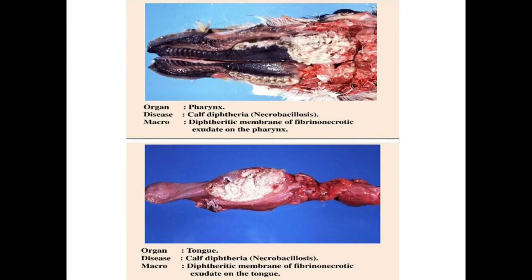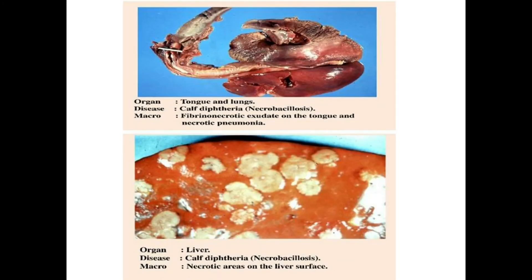In the images, you can see the pharynx in calf diphtheria: a diphtheritic membrane of fibronecrotic exudate on the pharynx is visible in the upper image, while the bottom image shows tongue lesions — a diphtheritic membrane of fibronecrotic exudate on the tongue. Additionally, fibronecrotic exudate on the tongue, necrotic pneumonia of the lung, and necrotic areas on the liver surface can also be seen.